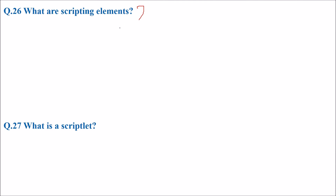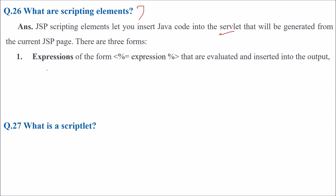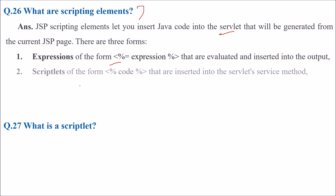What are scripting elements? The JSP scripting elements let you insert Java code into the servlet that will be generated from the current JSP page. There are three forms. First is the expression of the form: angle-bracket percent equals expression percent angle-bracket — these are evaluated and inserted into the output.